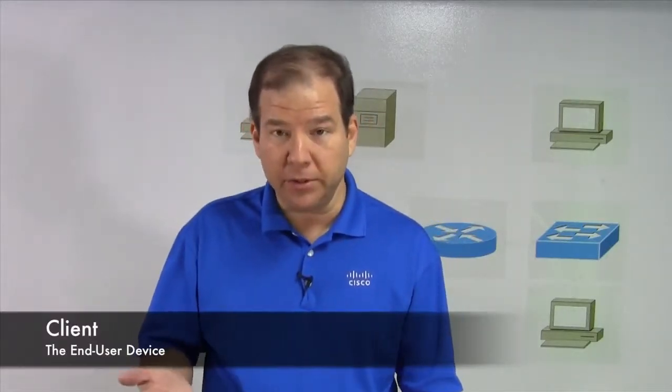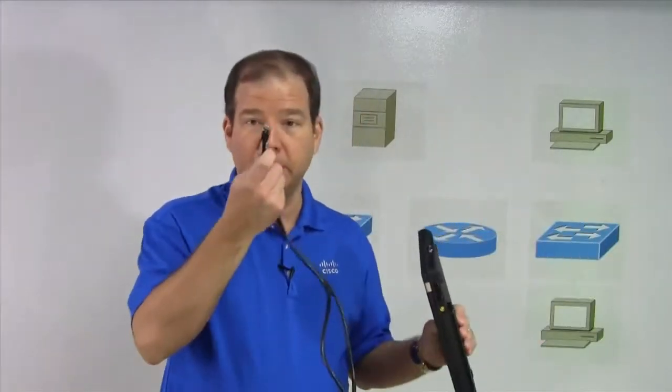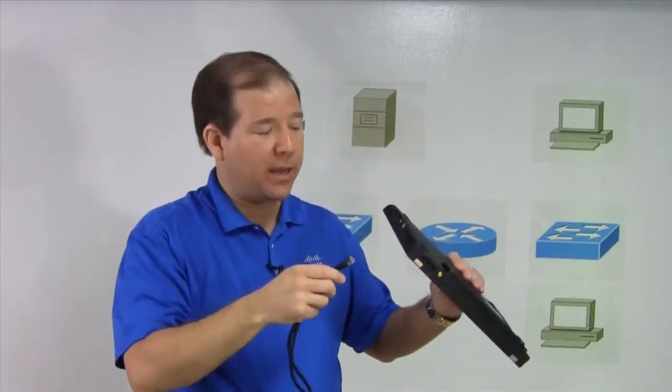We've got the client, the device that the end user is using. It could be a laptop. The laptop is going to connect into a wired network by plugging in something like this. This is a Category 6 Ethernet cable.